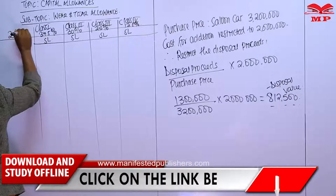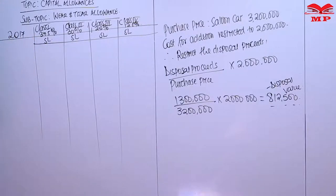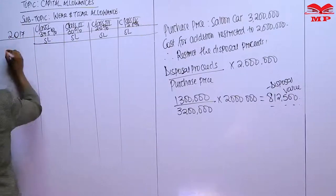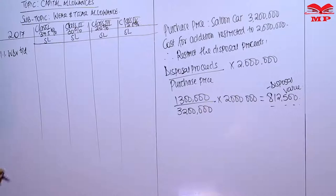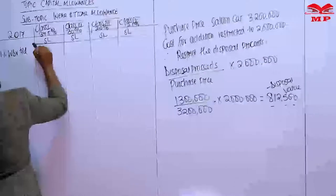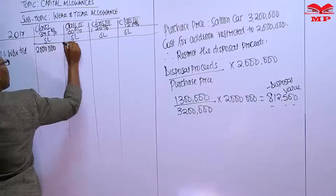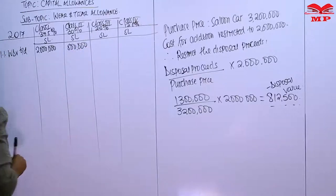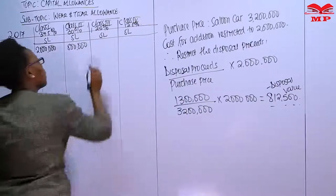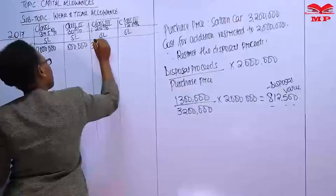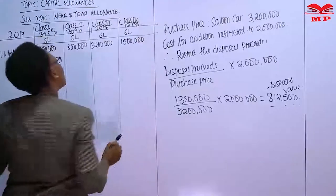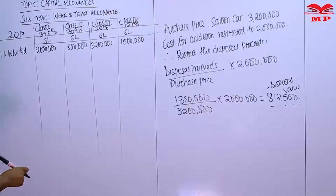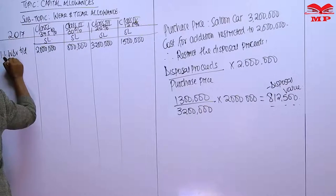We open the schedule for 2017. The written down value brought down is entered in the respective classes: Class 1 - 2 million, Class 2 - 800,000, Class 3 - 3.2 million, and Class 4 - 1.5 million. These represent the residue we are yet to claim for from previous years. We now record additions for 2017.